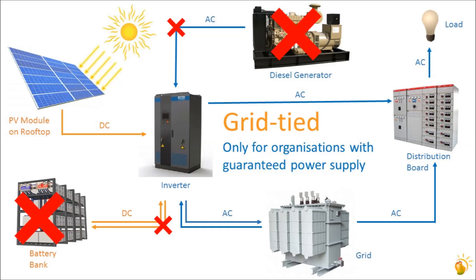The simplest kind of plant integrates only with grid power and has no other backup power source. This is known as a grid-type plant as it is always in sync with the grid. We would recommend this plant only for organizations that have a guaranteed supply of grid power. A pure grid-type solar plant will not suit you if you suffer from frequent power interruptions, as such a plant will not work when the grid does not work.